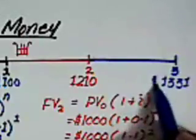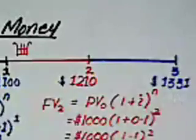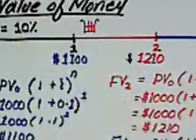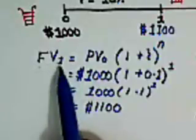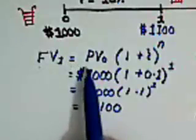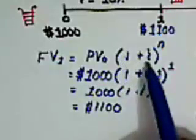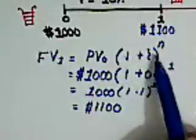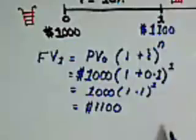So now you can see that we can solve a number of different problems just by using this simple formula: future value at the end of time N equals to the present value at time zero multiplied by one plus the annual compound interest rate raised to the power N. The same formula can be used to calculate the present value.